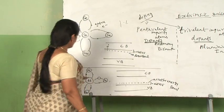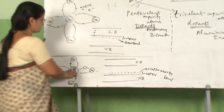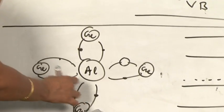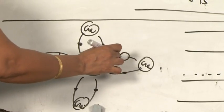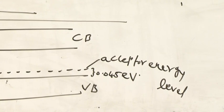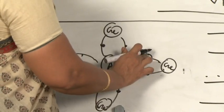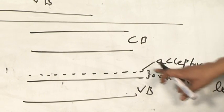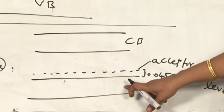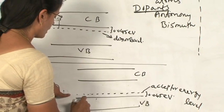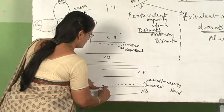For trivalent impurity atoms, taking aluminium as an example: the aluminium atom replaces the germanium atom, and its 3 valence electrons form 3 covalent bonds, leaving the 4th covalent bond incomplete. This incomplete covalent bond acts as a hole in the crystal lattice — a positive charge. These holes occupy an energy level closer to the valence band, which is called the acceptor energy level, because it accepts electrons from the valence band, leaving behind holes.